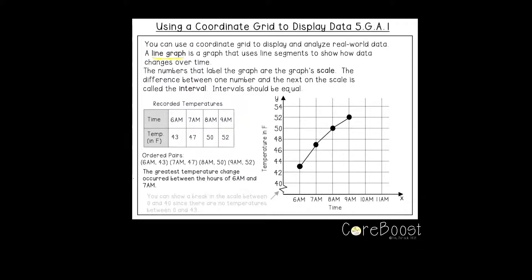So along our x and y axis is our scale. The difference between one number and the next on the scale is called the interval. Intervals should be equal.